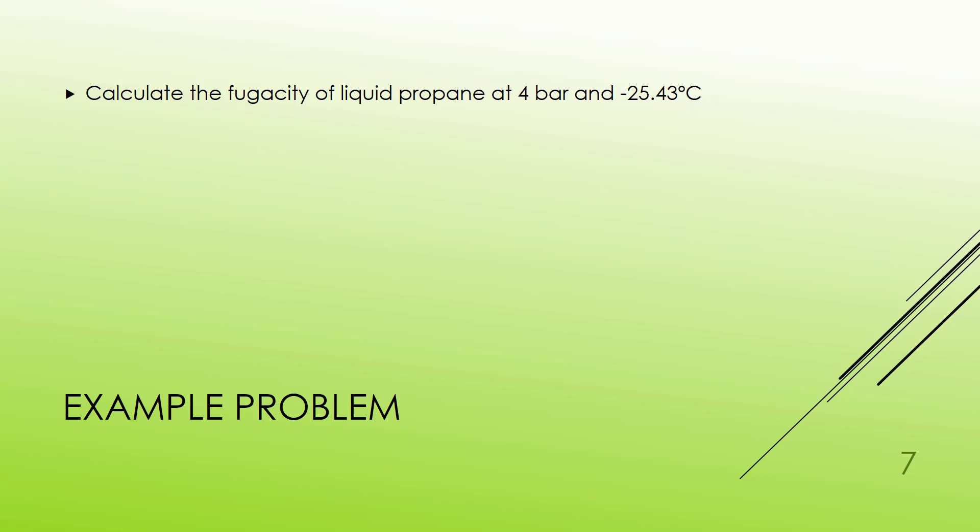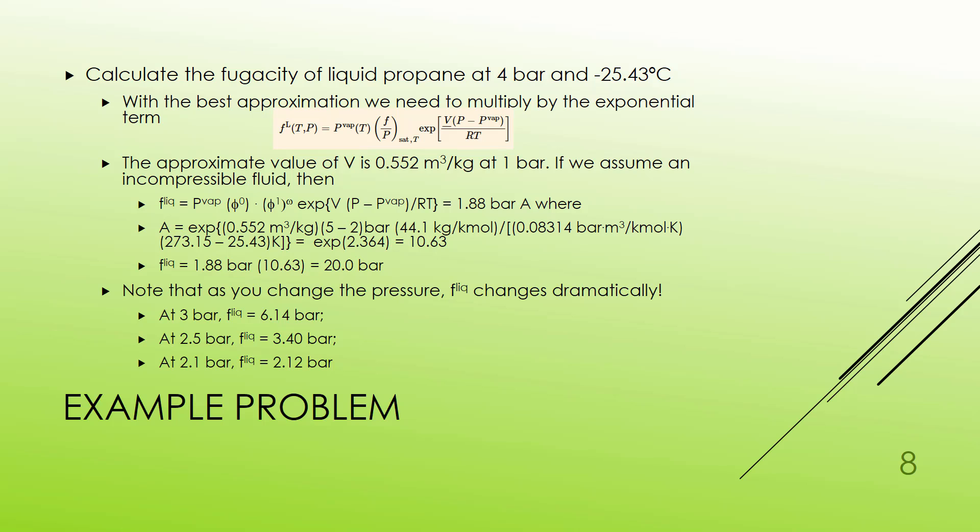But what if I wanted to increase the pressure? Let's say to 4 bar and negative 25.43 degrees C. The vapor pressure is still 2 bar. But now I'm going to have a liquid at a higher pressure. I want to use the best approximation formula in these conditions. So I'm going to start with my answer at saturation, which was the 1.88 bar, and multiply by the exponential of specific volume times the pressure minus the vapor pressure over RT.